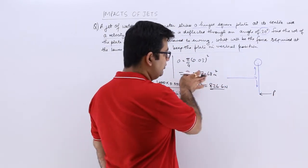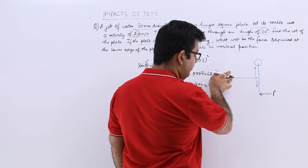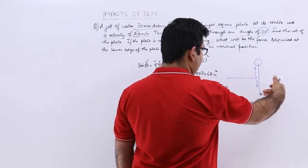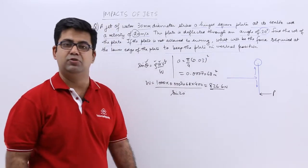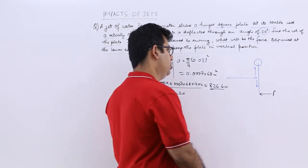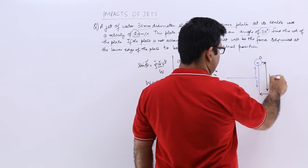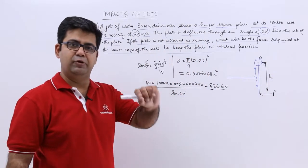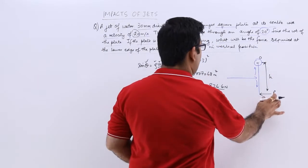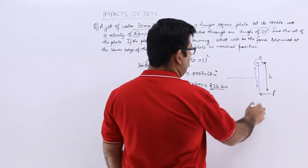If the water is striking over here, it will try to deflect that side, but this force is keeping it vertical, not allowing it to deflect. Let's say this is point O and this entire distance is h from the hinge point to the point of application of this horizontal force p.